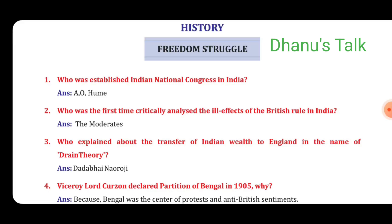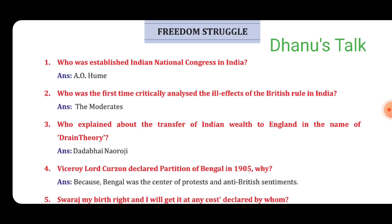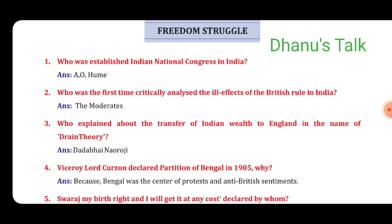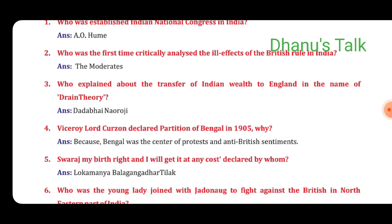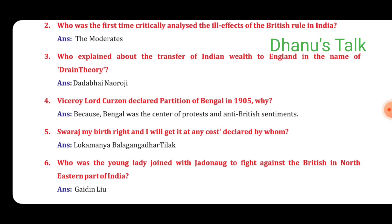First question: Who established the Indian National Congress in India? Answer: A.O. Hume. Second: Who was the first to critically analyze the ill effects of British rule in India? Answer: The Moderates. Third: Who explained about the transfer of Indian wealth to England in the name of Drain Theory? Answer: Dadabhai Naoroji.